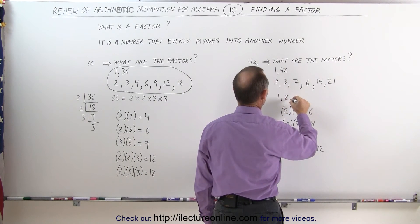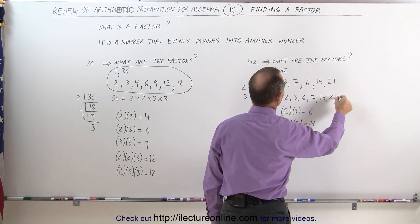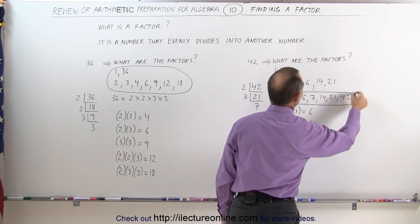1, 2, 3, 6, 7, 14, 21, and 42. These should be all of the factors of 42.